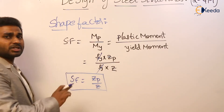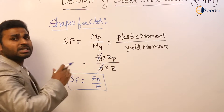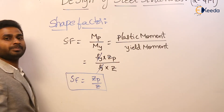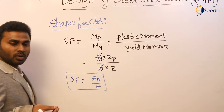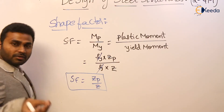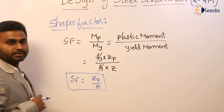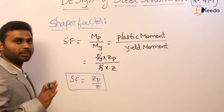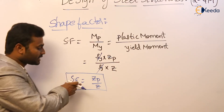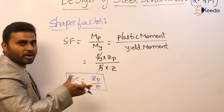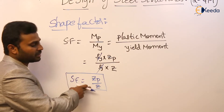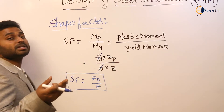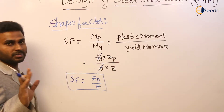The significance of shape factor is that it represents the reserve strength of a material beyond yielding. If the shape factor is more for a material, it will have more resistance beyond yielding. The formula for shape factor is ZP by Z, and its physical significance is that it represents reserve strength beyond yielding.